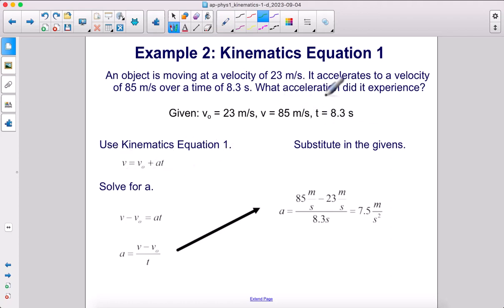We're going to use kinematics equation one. But this time, we're solving for acceleration. First, we subtract V-naught to the other side, then divide both sides by t. Here's our equation. Then we plug in our givens and get 7.5 meters per second squared.